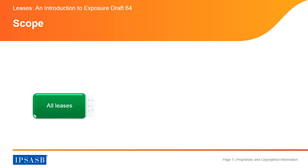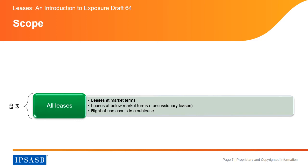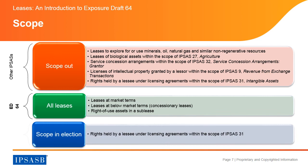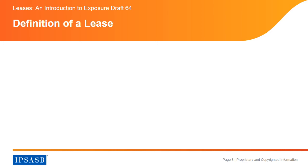The scope of Exposure Draft 64 includes all leases at market terms, concessionary leases and right-of-use assets in a sub-lease. Exposure Draft 64 does not include leases to explore for or use minerals, oil, natural gas and similar non-regenerative resources, leases of biological assets, service concession arrangements, licenses of intellectual property granted by a lessor, and rights held by a lessee under licensing agreements such as motion picture films, video recordings, plays, manuscripts, patents and copyrights. These are within the scope of other IPSAS. However, rights held by a lessee under licensing agreements can be within the scope of ED64 if the lessee elects to apply it.